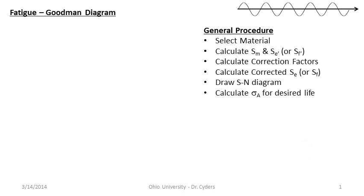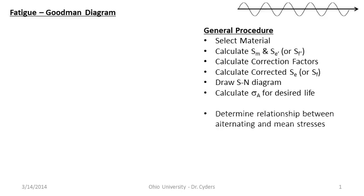Generally, we go through the first set of steps: select our material, calculate our SN diagram, use our correction factors, and make a first guess at the design — the better the guess, the fewer iterations needed. We calculate our corrected endurance strength, draw the SN diagram, and calculate the alternating stress for the desired life at a factor of safety of one — in other words, the alternating stress on that curve. Then we need to determine the relationship between the alternating and mean stresses.